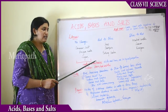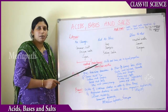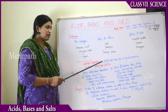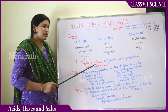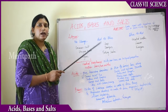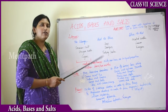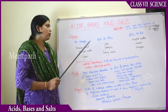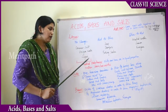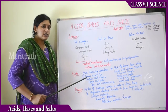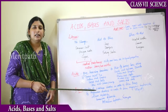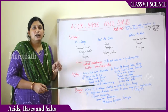In neutral substances, both acids and bases are present in equal proportion, which is why they are known as neutral substances — neither acidic nor basic. Now let's take some examples of acids. Whenever a honey bee bites you, you immediately get a burning sensation.